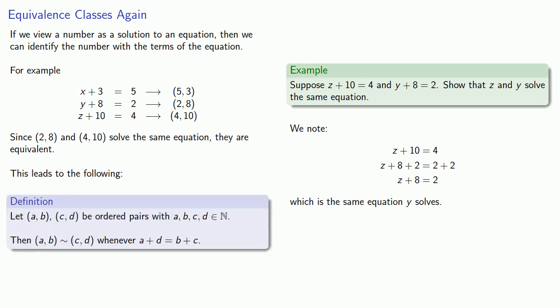Let a, b, c, d be ordered pairs of natural numbers. Then a, b is equivalent to c, d whenever a plus d is equal to b plus c. If you want, the outside numbers add to the inside numbers.